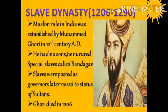The Slave dynasty ruled from 1206 to 1290. Muslim rule in India was established by Muhammad Gauri in the 12th century AD. As he had no sons, he nurtured special slaves called Bandhan — a Persian term used for slaves purchased for military service. These slaves were posted as governors and were later raised to the status of Sultans.